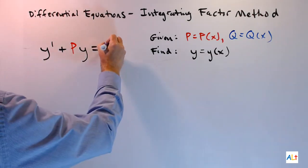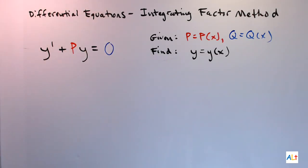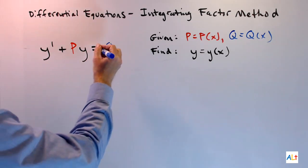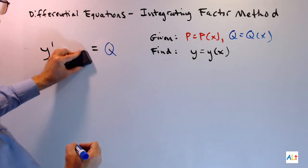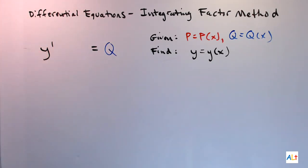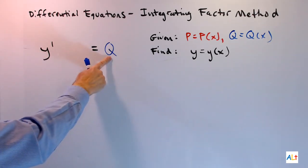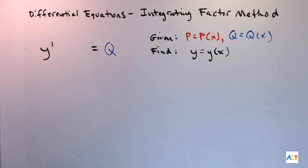Now, if Q is zero, this method is not necessary. There's an easier way to do it. You can solve using the method of separation of variables, and I've got a video on that you can check out if you're interested. Similarly, if P is equal to zero, this method is also overkill. All you need to do to find Y here is to integrate Q. This isn't even technically a differential equation at all.